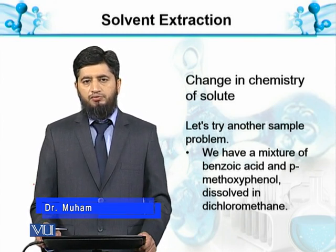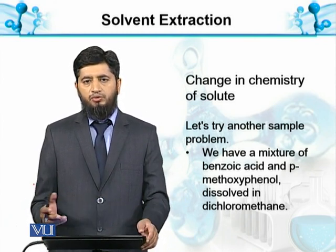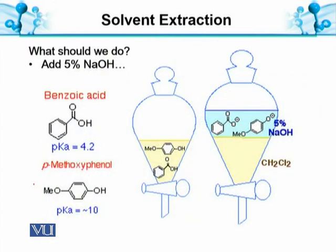We have a mixture of Benzoic Acid and Phenol — specifically Paramethoxy Phenol. Both are acidic in nature, but Benzoic Acid is definitely a stronger acid compared to Paramethoxy Phenol. The pKa value of Benzoic Acid is 4.2, while the pKa value of Paramethoxy Phenol is 10, meaning it is a very weak acid.